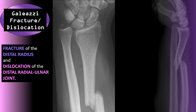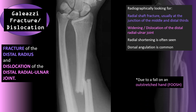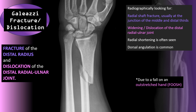A Galeazzi fracture-dislocation is a fracture of the distal radius combined with a dislocation of the distal radial-ulnar joint. Radiographically, we're looking for a radial shaft fracture usually at the junction of the middle and distal thirds, widening and/or dislocation of the distal radial-ulnar joint, radial shortening, and dorsal angulation. The most common mechanism of injury is a FOOSH — a fall on an outstretched hand.